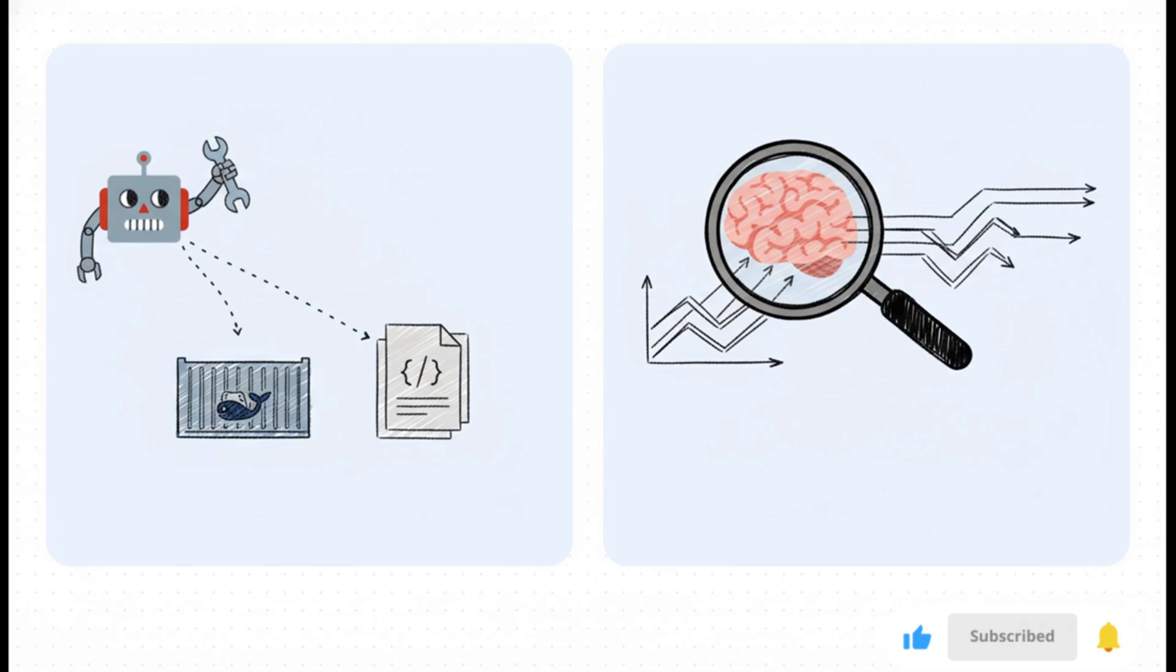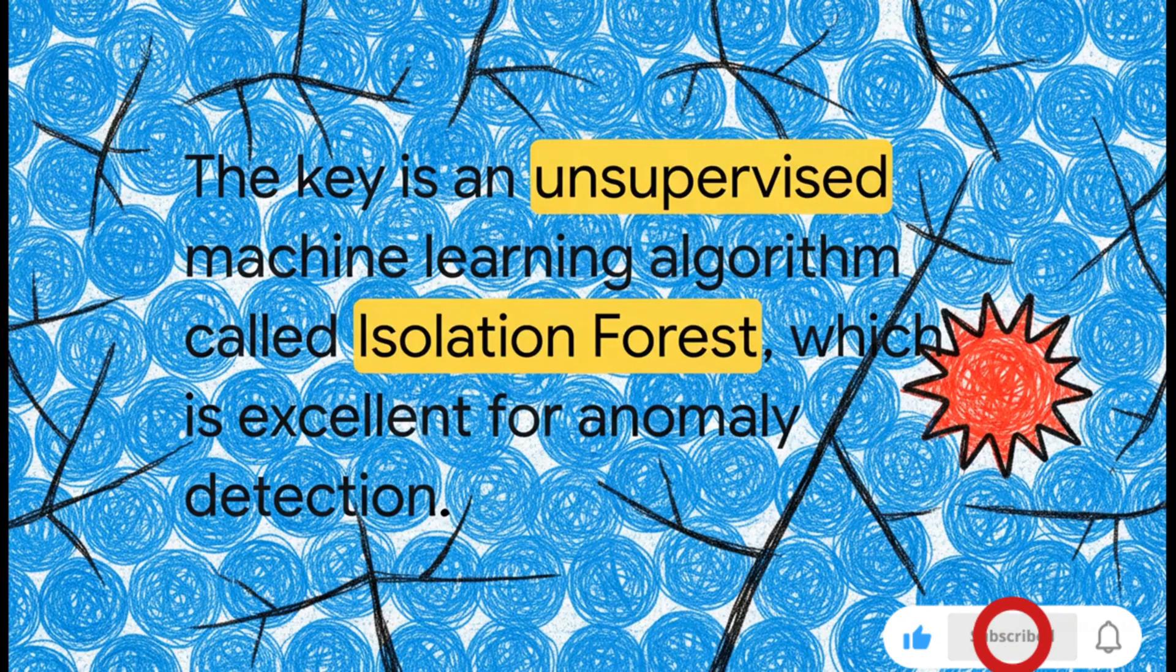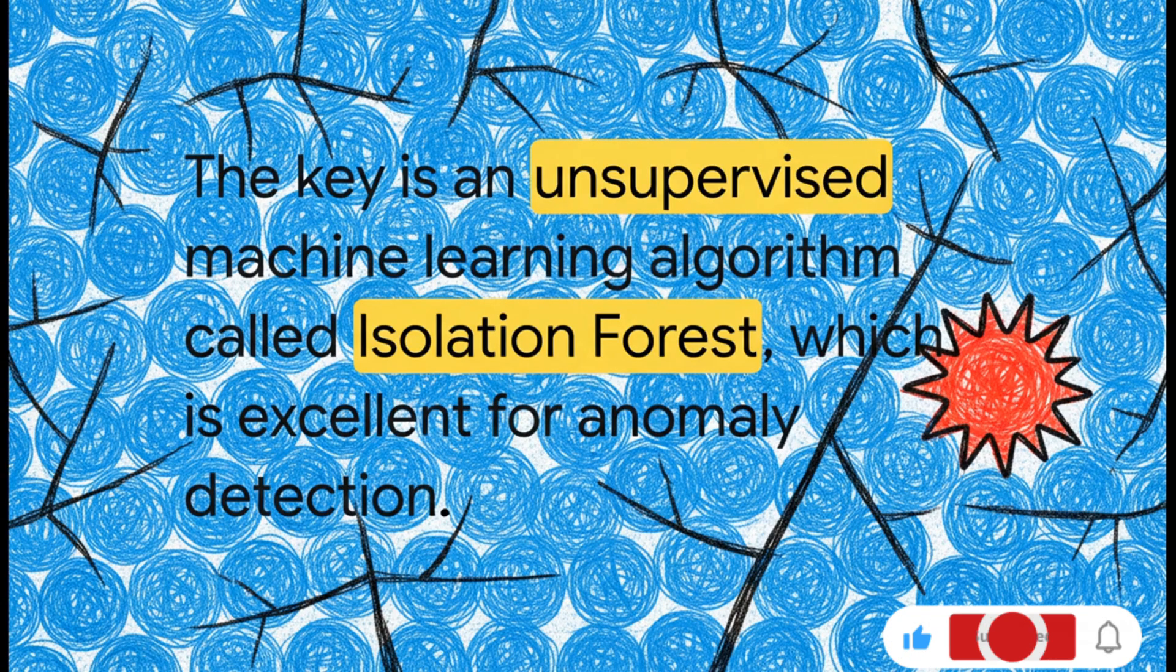It's about using AI to understand the mountains of data, the metrics, the traces, and especially the logs that your systems are already creating. So what's the secret sauce here? Well, the magic behind the AIOps script we're looking at is a machine learning algorithm called Isolation Forest. Now don't worry, you don't need a PhD in math to get this. All you need to know is that this algorithm is incredibly good at one thing: spotting the odd one out in a giant crowd of data. It literally works by isolating the weird stuff, the anomalies—hence the name, Isolation Forest.